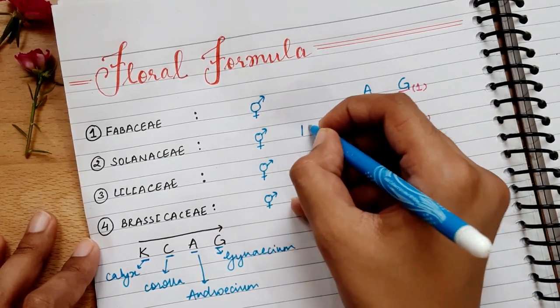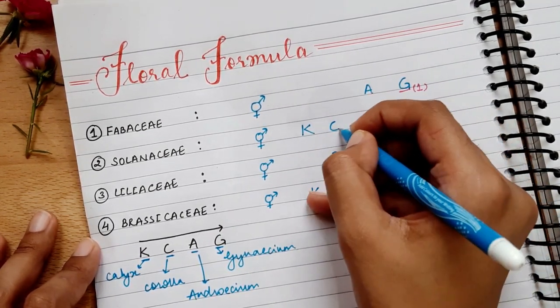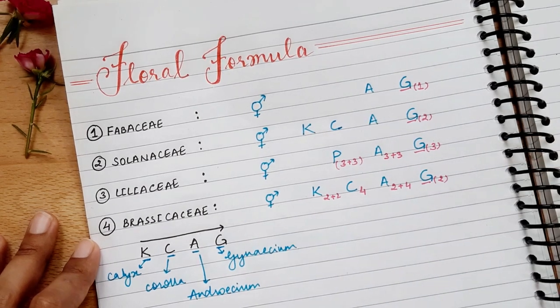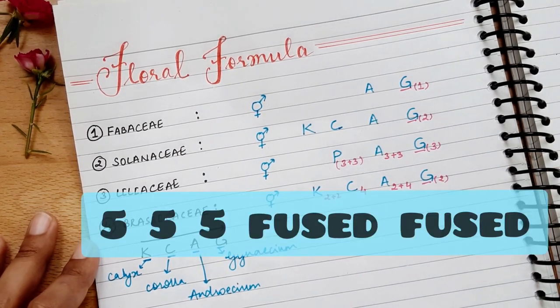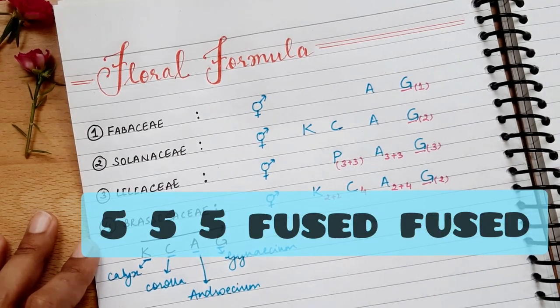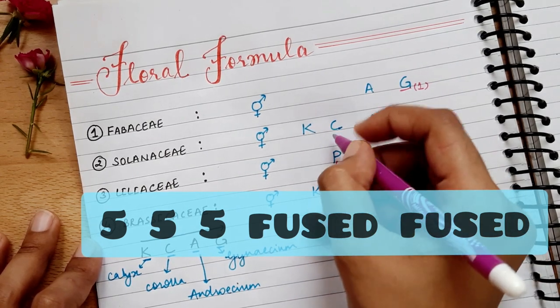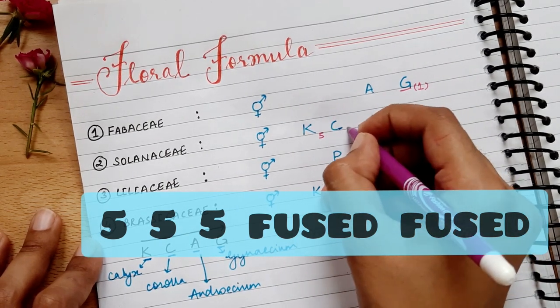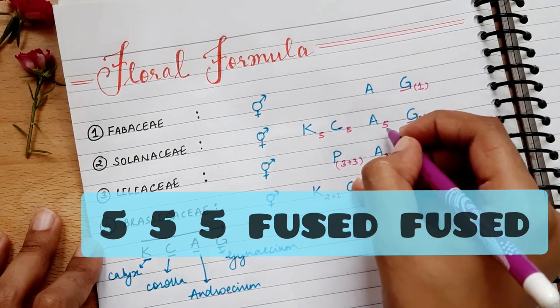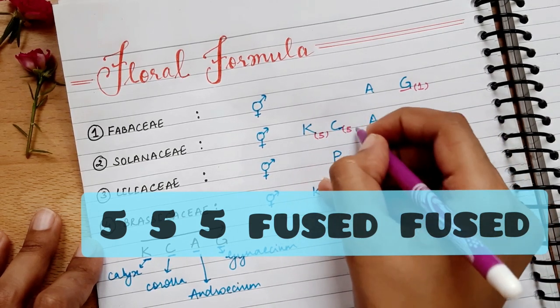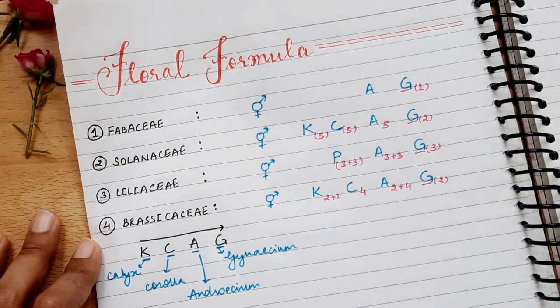Now coming to Solanaceae. So this is K, C, and A is a little different. So remember to remember this line: 555 fused, fused. So I will write here 555 fused, fused.